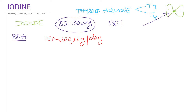The iodine content of the blood is about 5 to 10 micrograms per deciliter, that is per 100 ml of blood. Iodine is an important mineral element required for the biosynthesis of thyroid hormone.